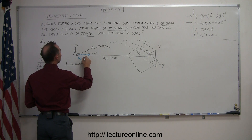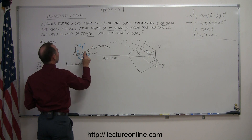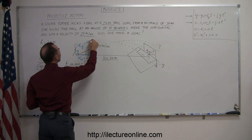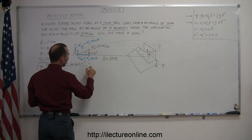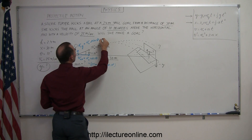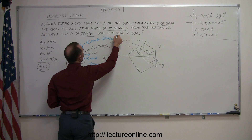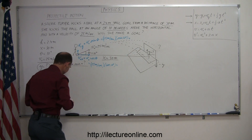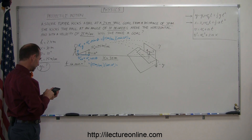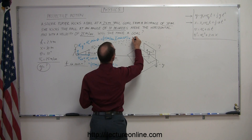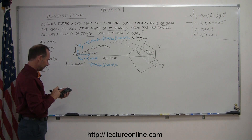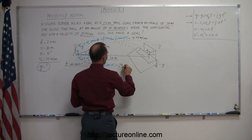We need to figure out v initial in the x direction and v initial in the y direction. Since the x-component is adjacent to the angle, it equals v initial times the cosine of the angle. The y-component is opposite to the angle, so it equals v initial times the sine of the angle. Plugging in the numbers: v initial x equals 25 meters per second times cosine of 10 degrees, which gives 24.6 meters per second. V initial y equals 25 times sine of 10 degrees, which gives 4.34 meters per second.